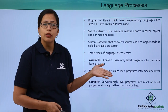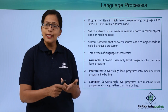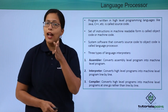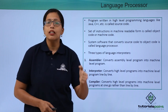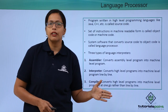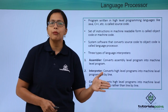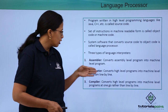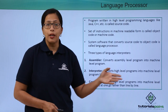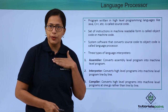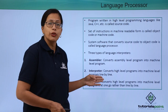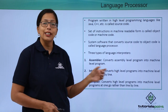What does an assembler do? It will convert an assembly level program into a machine level program. Remember that at the end, the instructions have to be in machine level language so that the computer can carry out those instructions. What does an interpreter do? It will convert the high level programs — the programs that we write and understand — into a machine level program line by line.